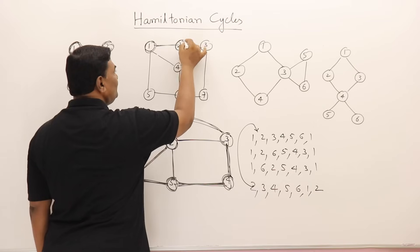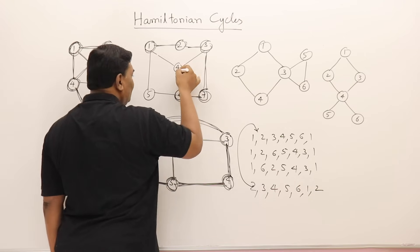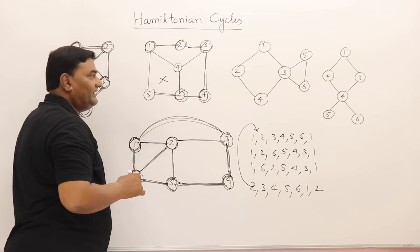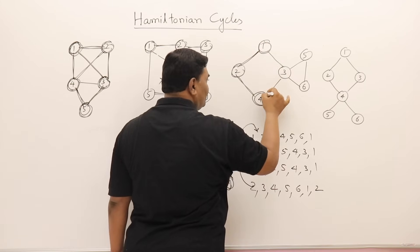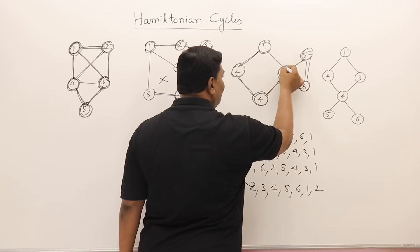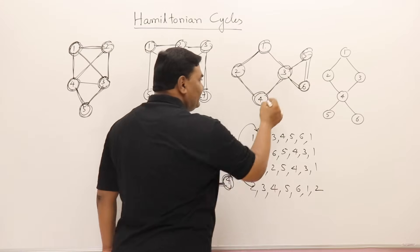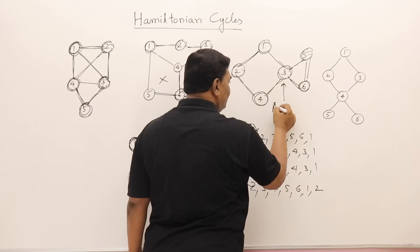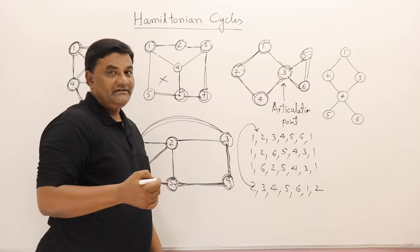In another graph, trying 1→2→3→7→6 — if I go to 4, I cannot reach 5; if I go to 5, I cannot reach 4. So a Hamiltonian cycle does not exist here. In yet another graph, vertex 3 is a junction or connecting point for the graph, called an articulation point. If there is an articulation point in a graph, then a Hamiltonian cycle cannot exist.